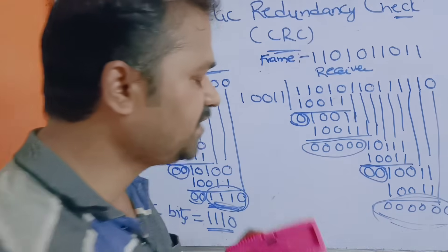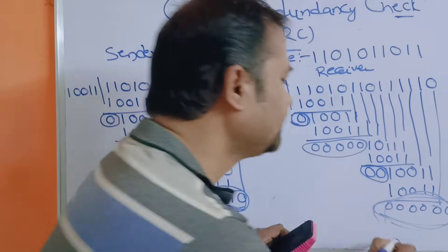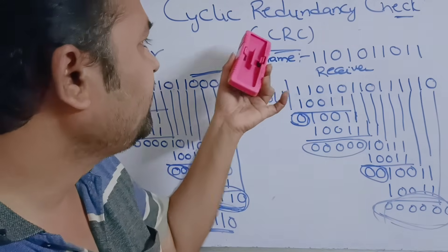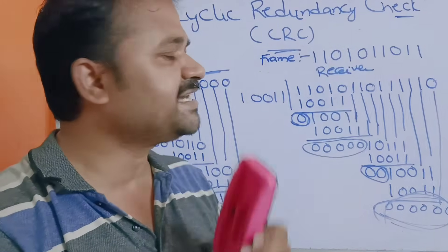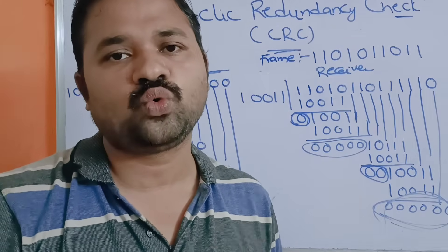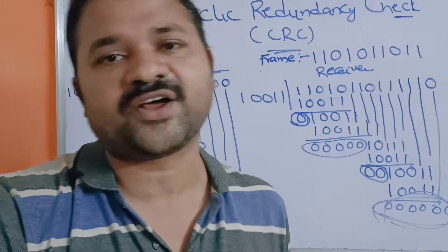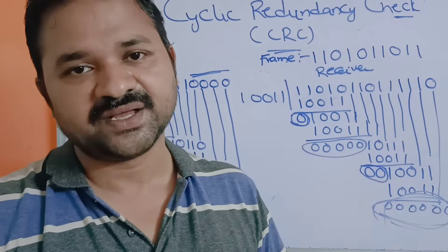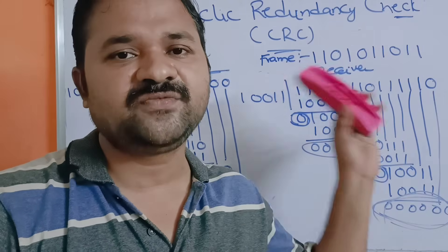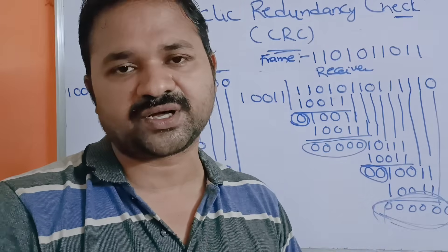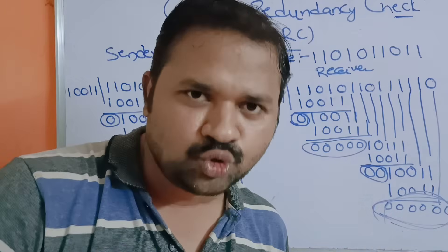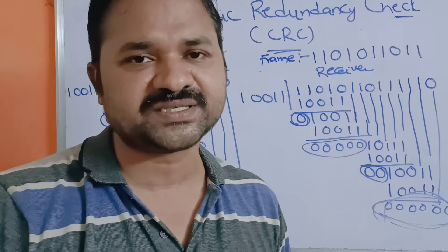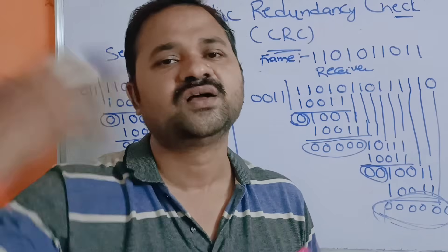The receiver gets remainder 0, so it knows there is no error in the message. In this way we use Cyclic Redundancy Check to determine whether there is any error or not. CRC is mainly useful for error detection only — error correction is not possible with CRC. In order to do error correction, we have to use other approaches, which will be discussed in the upcoming videos.